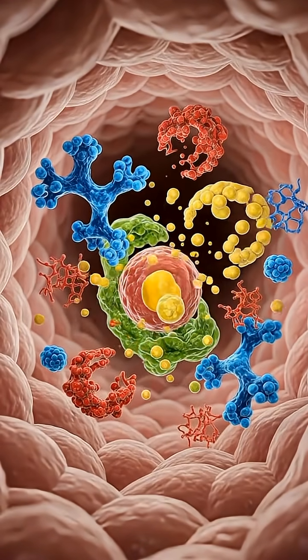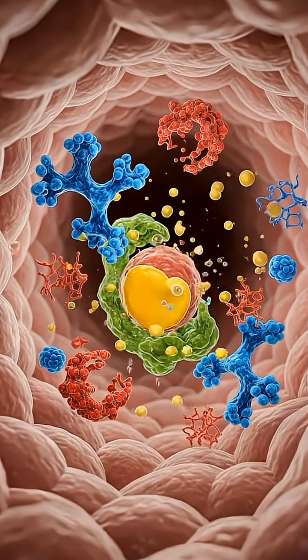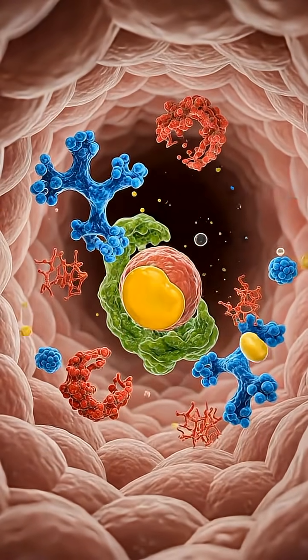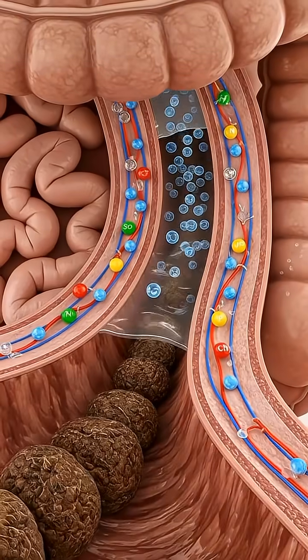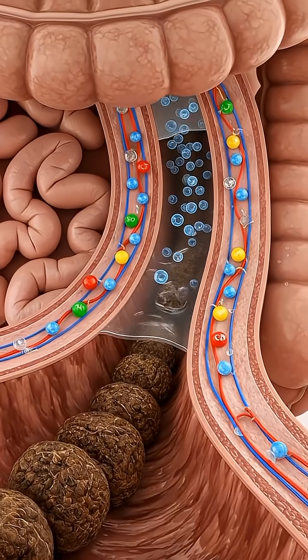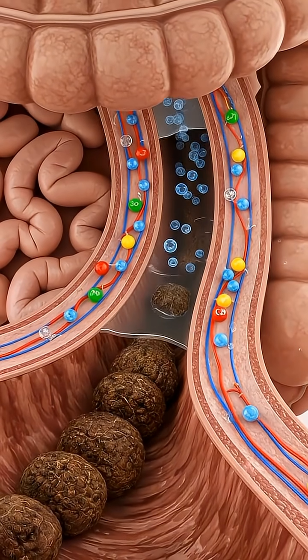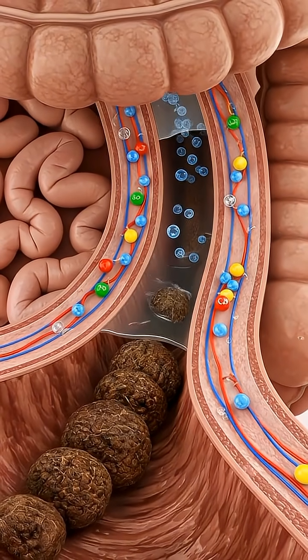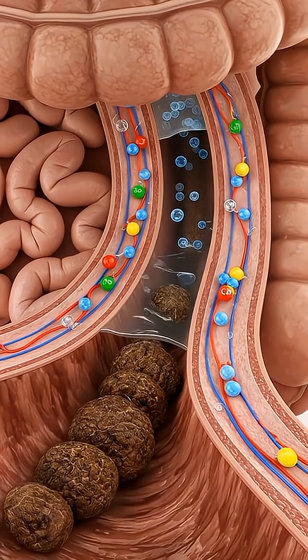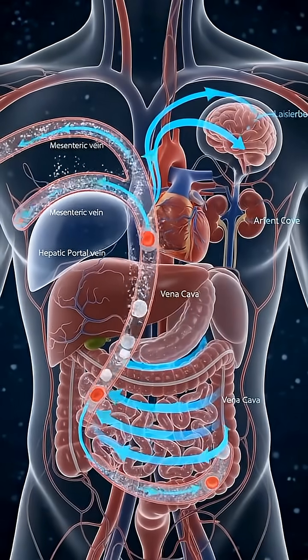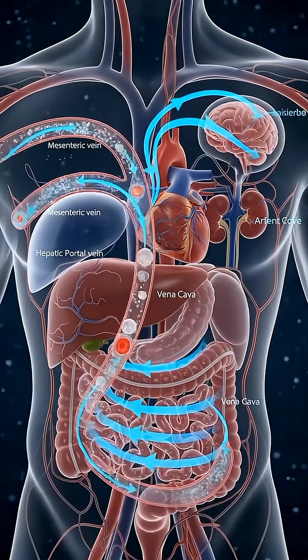Digestive enzymes and bile break food into smaller molecules, making absorption possible. The large intestine absorbs water and electrolytes, helping to form solid stool and maintain fluid balance.